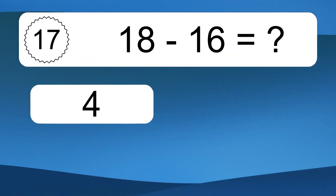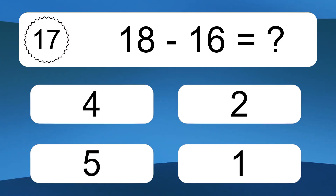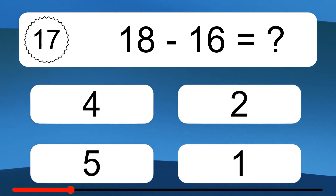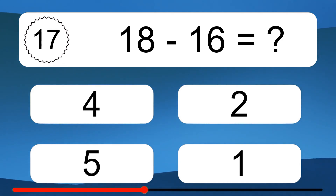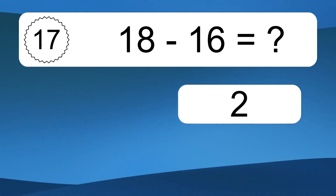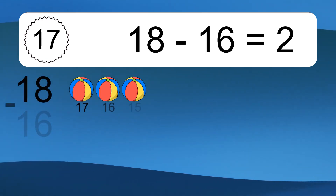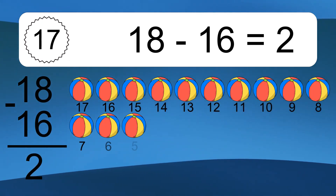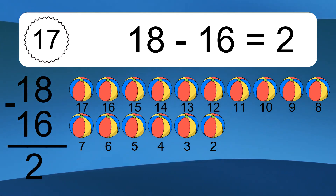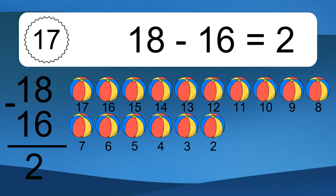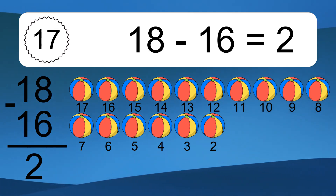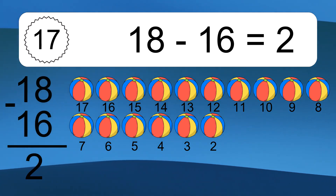18 minus 16 equals what? 18 minus 16 equals 2. Let's count it: 17, 16, 15, 14, 13, 12, 11, 10, 9, 8, 7, 6, 5, 4, 3, 2.